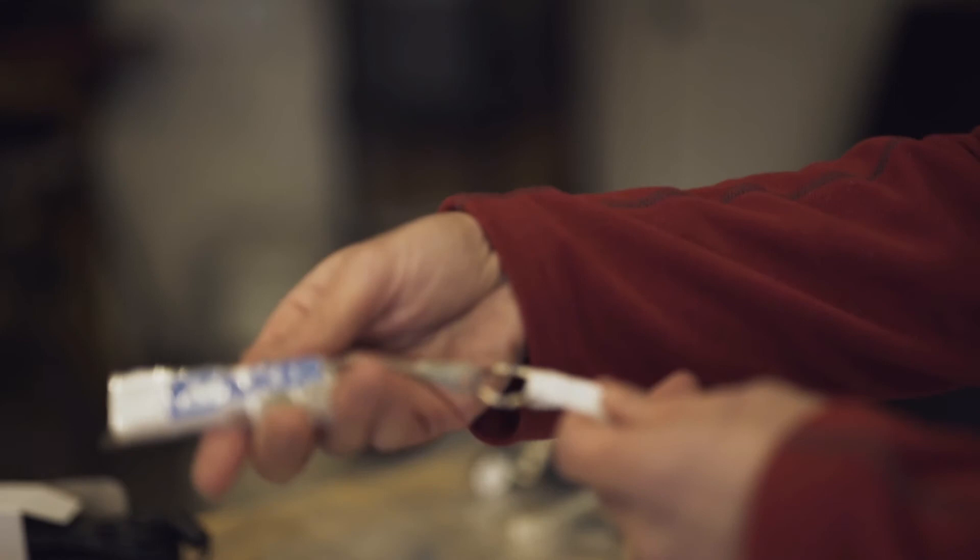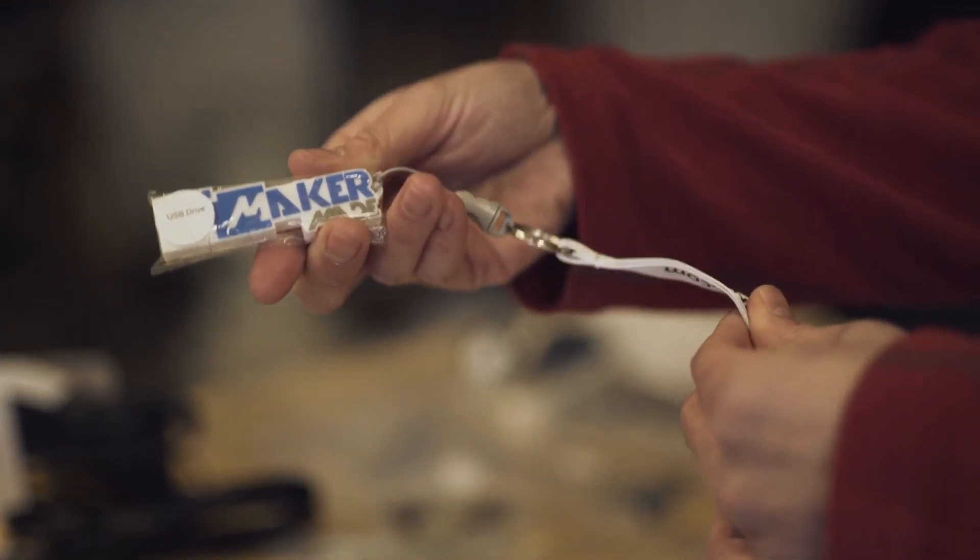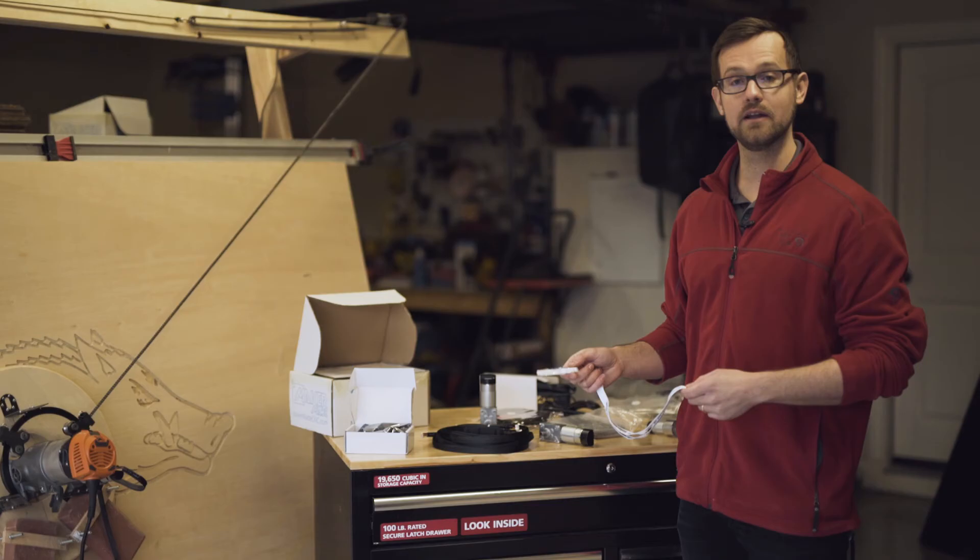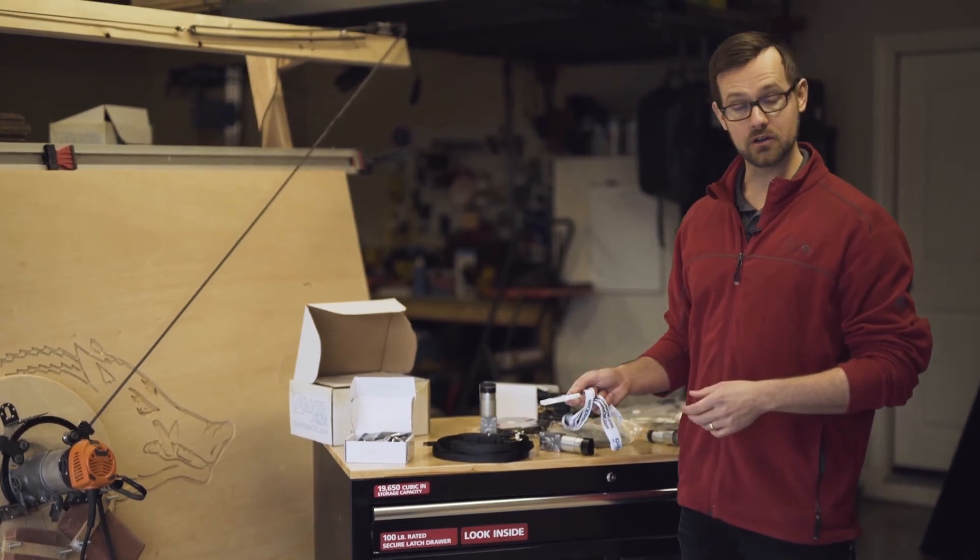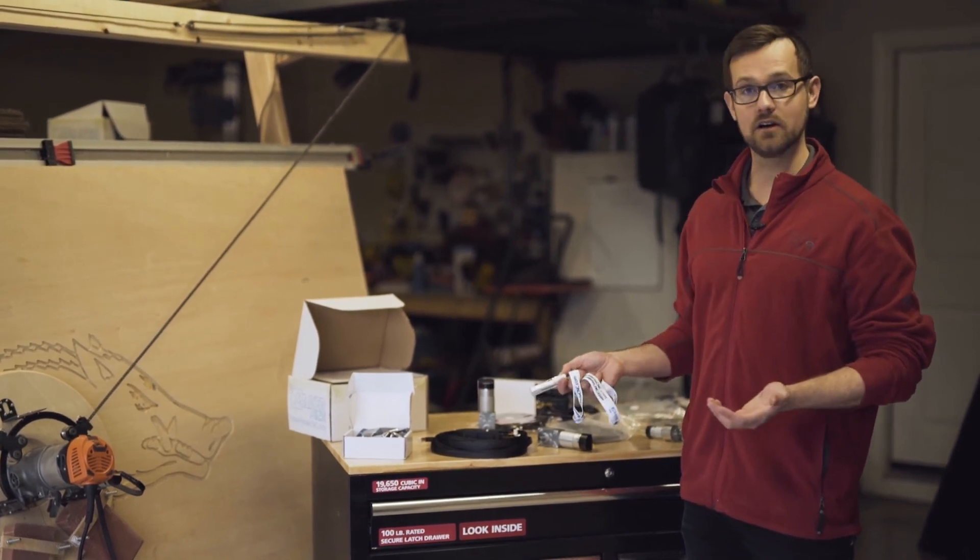Last, we have a USB drive. This actually comes with every kit. It's 8GB. It includes all the software you're going to need to install on your computer, as well as a bunch of free files you can use as projects to get started on your kit.